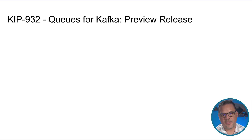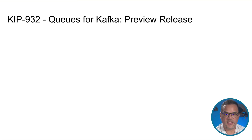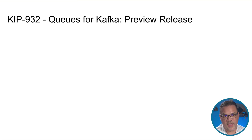Let's start with KIP 932, Queues for Kafka, which makes the move to preview thanks in large part to feedback from the community during the early access phase in Kafka 4.0.